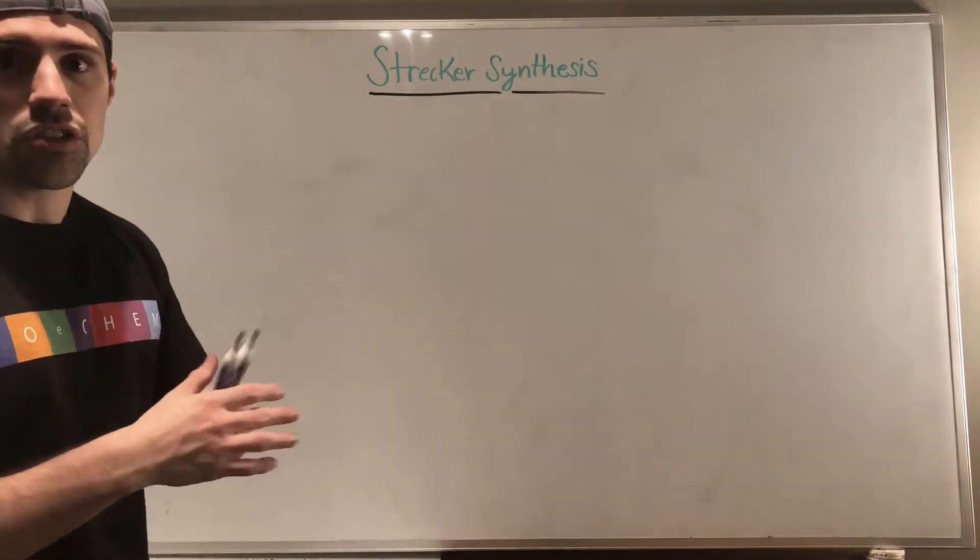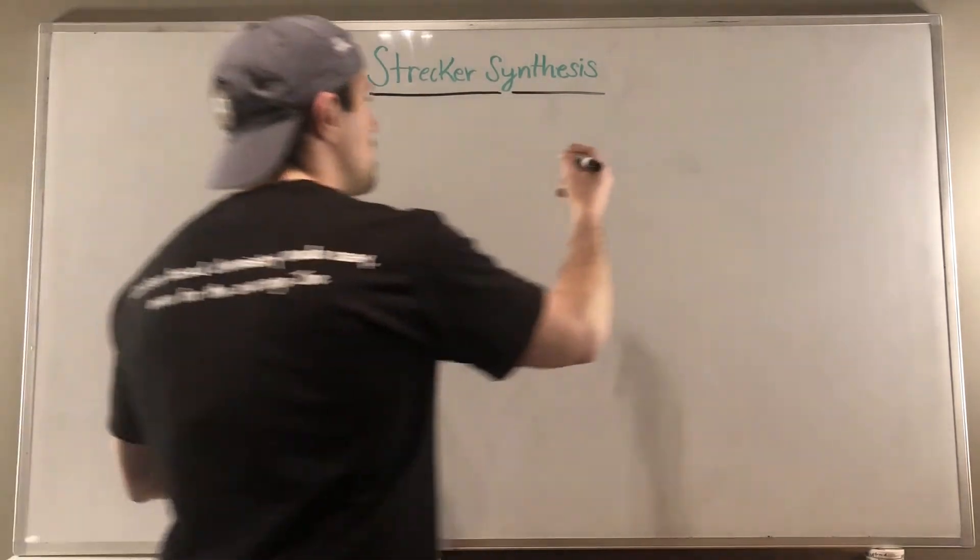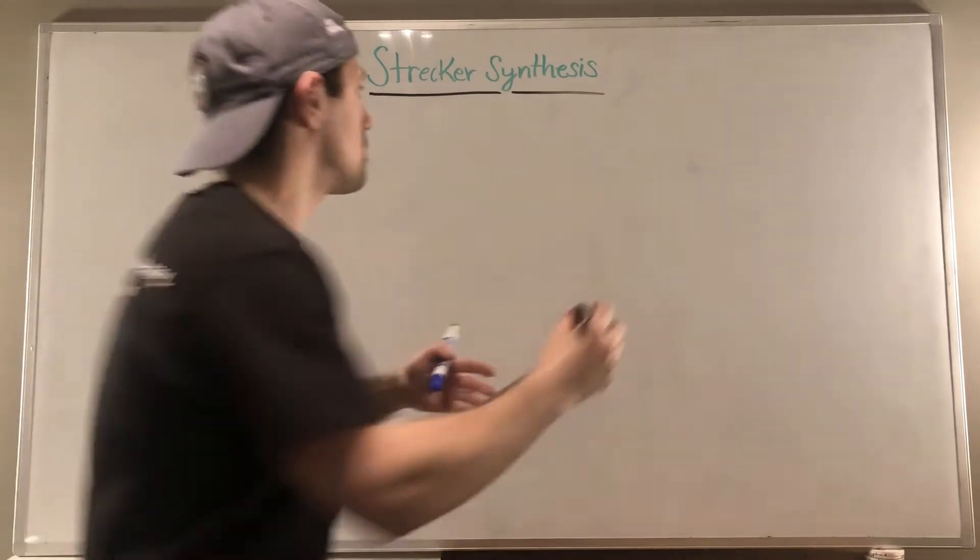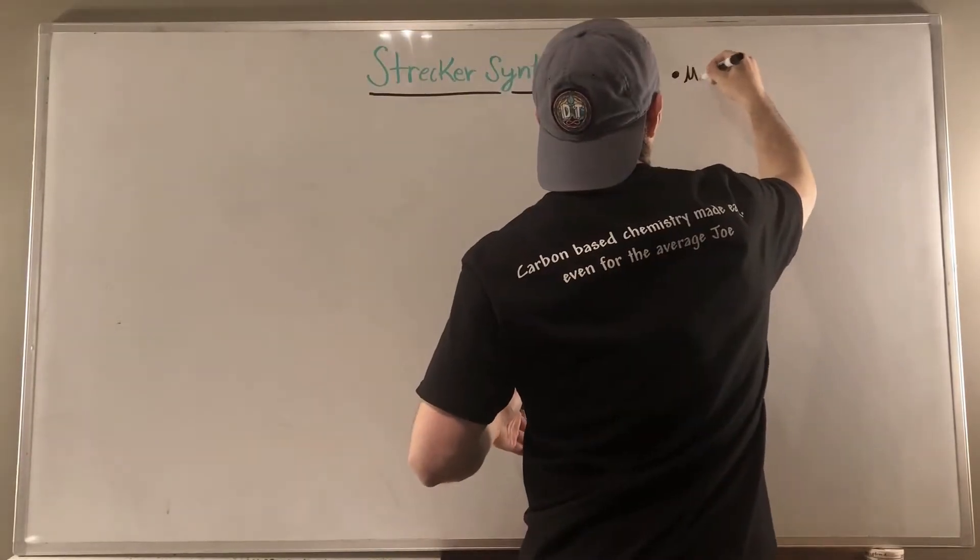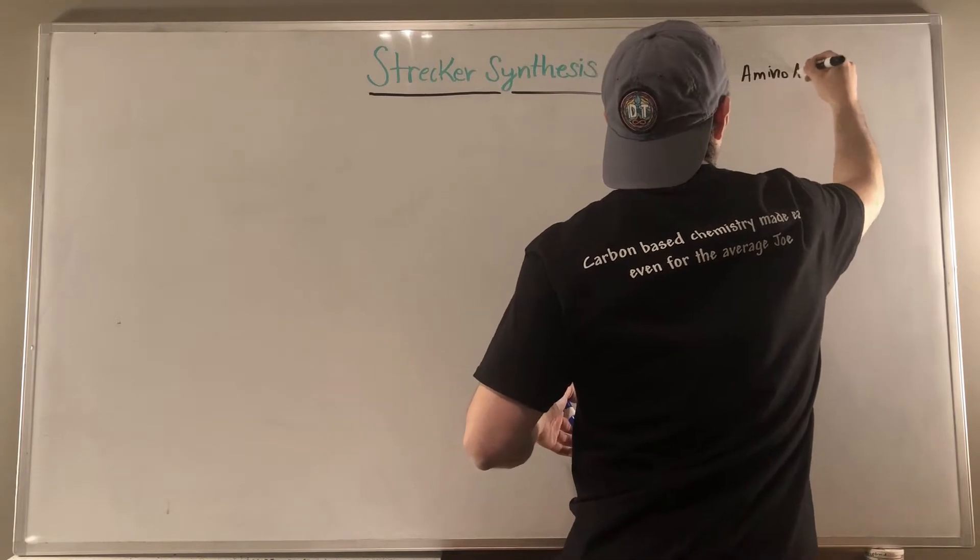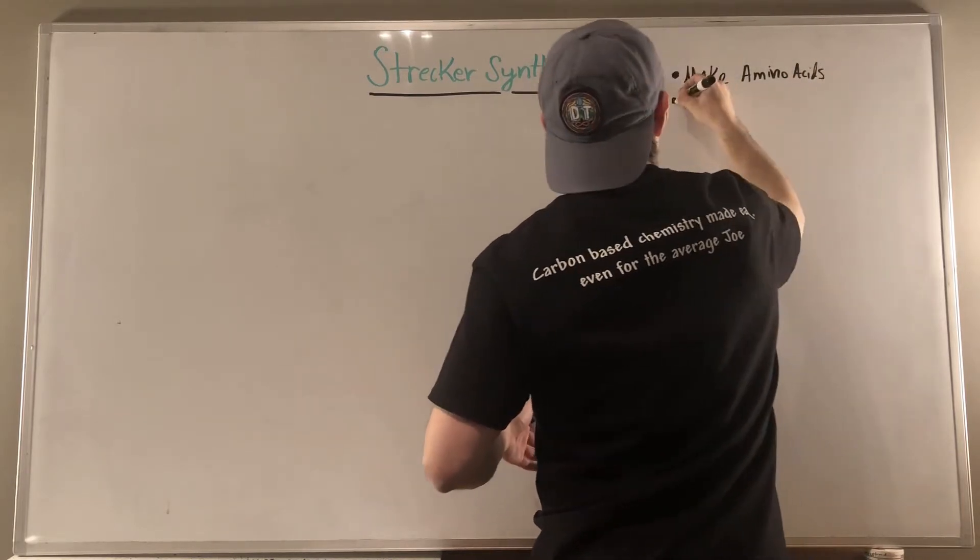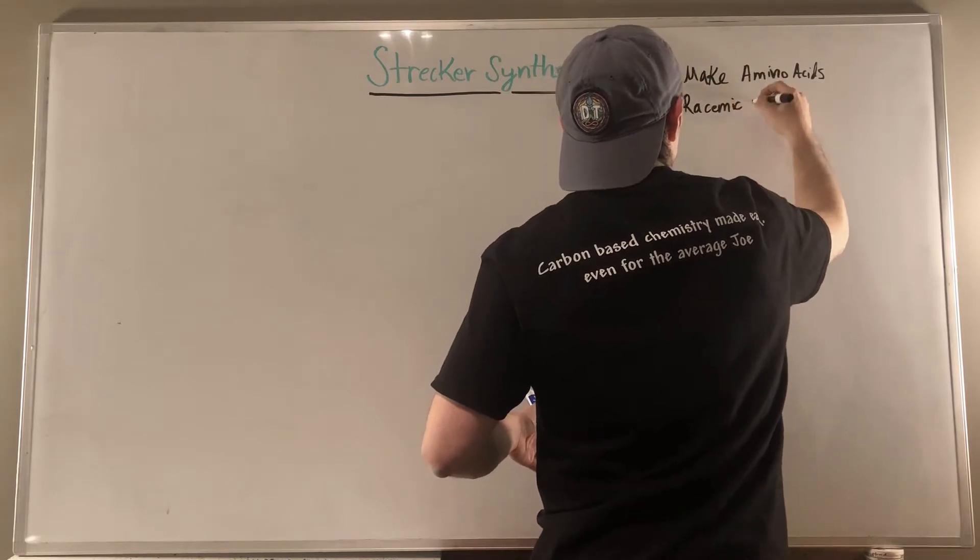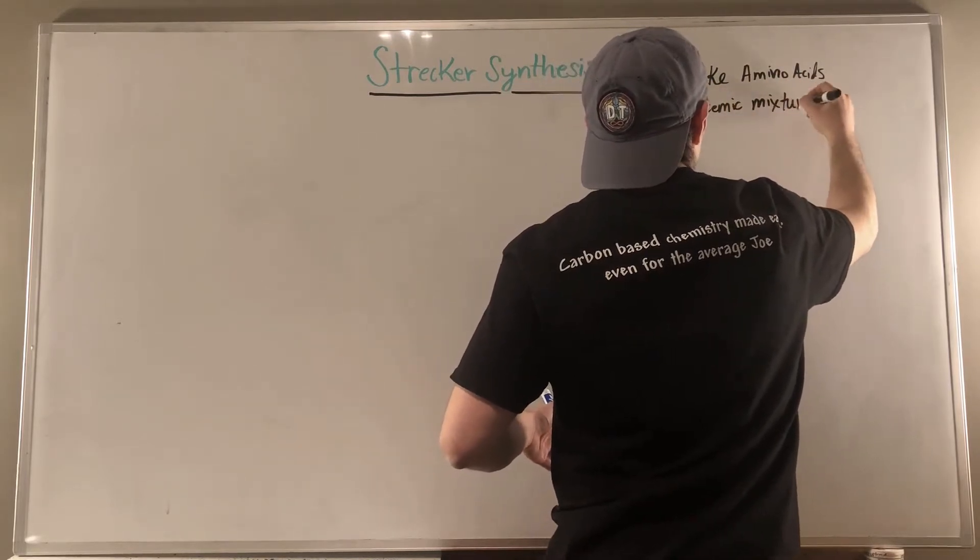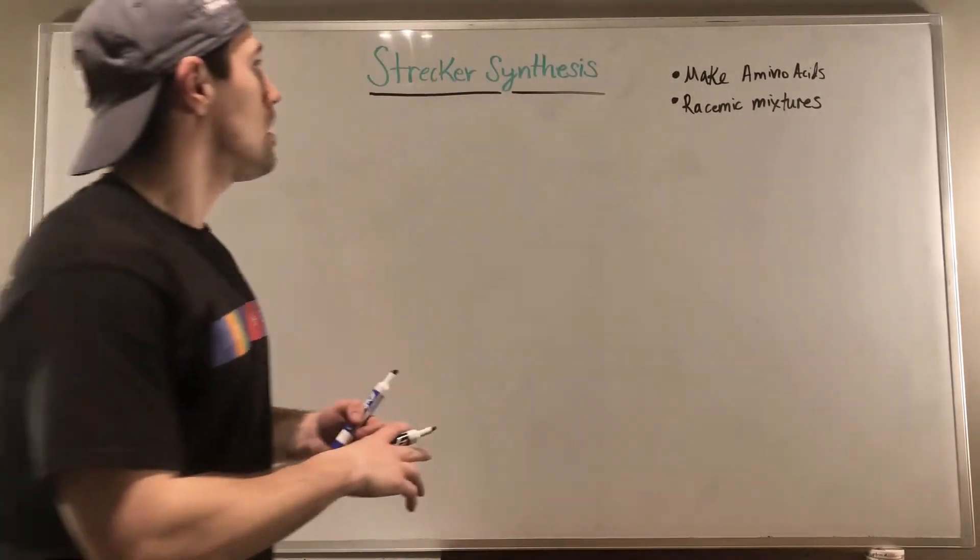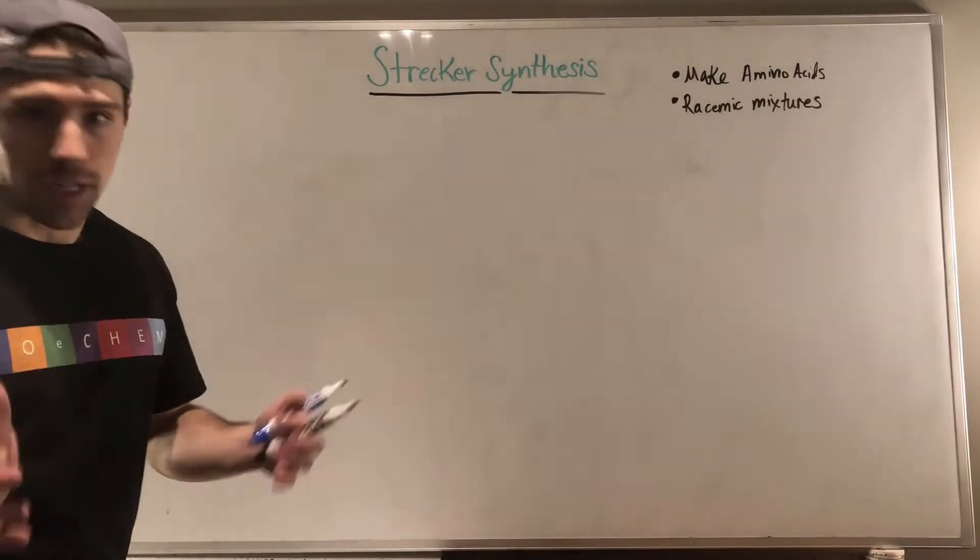I promise you this one actually will be. What's nice about the Strecker Synthesis is that it is really straightforward and it involves a lot of chemistry that we have reused time and time again. So luckily this will be a short video. So the Strecker Synthesis. We will make amino acids, and these amino acids, we will make them in a racemic mixture. We won't get all S or all R. We're going to get equal amount of both.